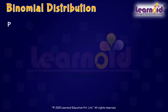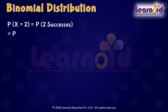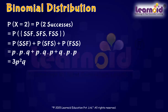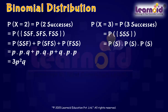Similarly, the probability of X equal to 2, i.e. two successes, is equal to the probability of getting success-success-failure, success-failure-success, or failure-success-success, which is equal to 3P squared Q. And finally, the probability of getting all three successes, i.e. P(X = 3), is P cubed.